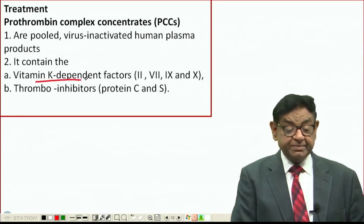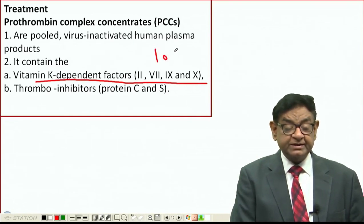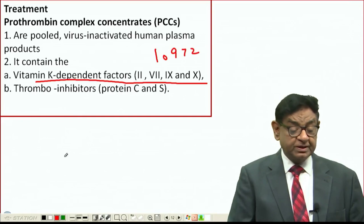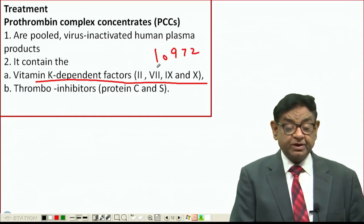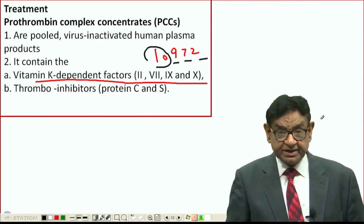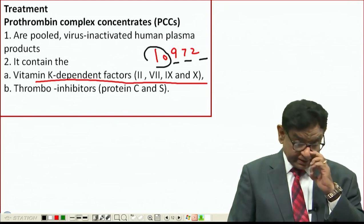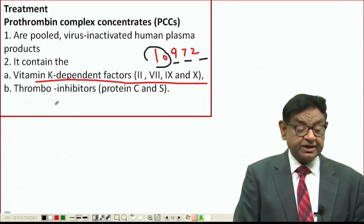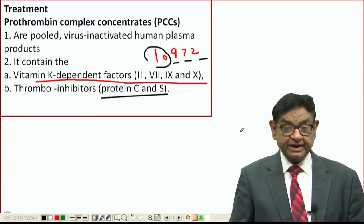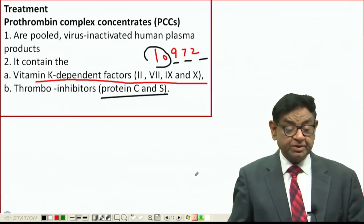Treatment for Haemophilia B involves giving prothrombin complex concentrate (PCC). PCC is a pooled virus-inactivated human plasma product containing vitamin K-dependent factors 2, 7, 9, and 10 — mnemonic: 1972 (factors 10, 9, 7, 2). It also contains thrombo-inhibitors protein C and protein S.